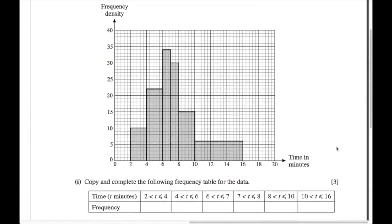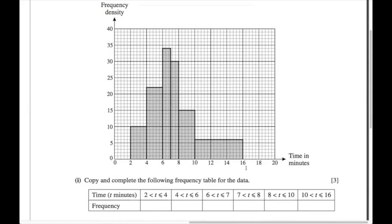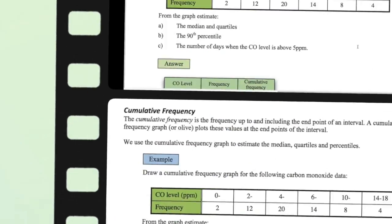Here we're given the histogram and just have to fill in the table — easy once you remember that frequency equals the area of the bar. The first bar has width 2 and height 10, so frequency is 20. The second bar has width 2 and height 22, so frequency for the 4 to 6 bar is 44. The rest follow from there.